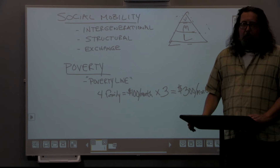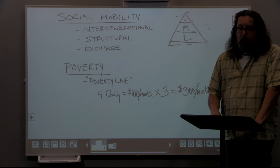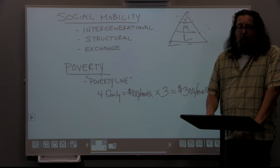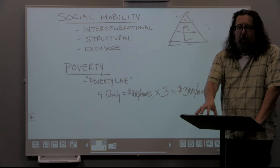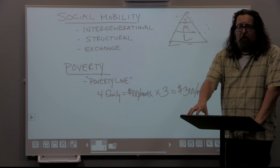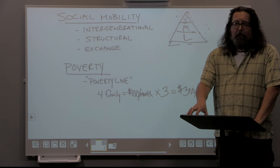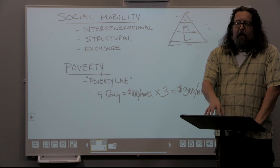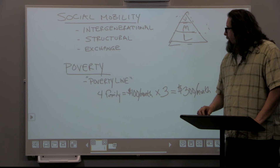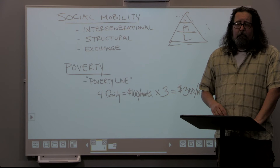Critics point out a couple of problems with this calculation. If a family of four is only bringing home $300 a month, would they actually be able to spend $100 of that on food? The answer is no — most families have expenses beyond food, and a family of four on $300 a month would be spending the majority on rent, daycare, medical attention, and transportation. The idea of spending a third of your income on food, even at a higher income level, is fairly unrealistic.